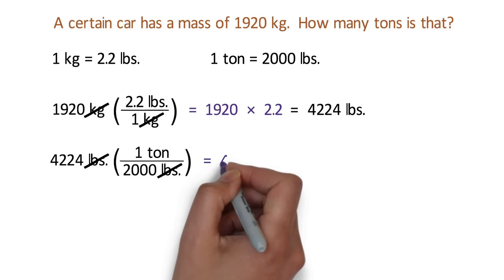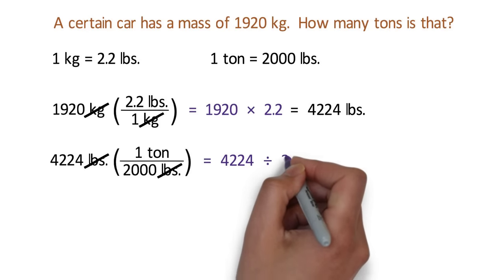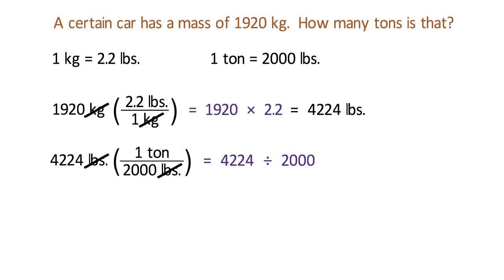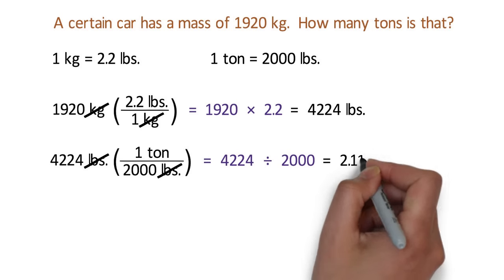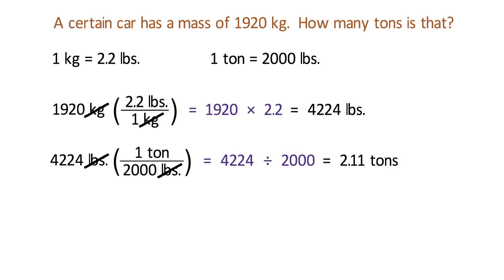In our calculator, we type 4,224 divided by 2,000 because the 1 is on the numerator of the fraction. Our final answer works out to be 2.11 tons. Okay, we got the correct answer, but it turns out that there is an even better way to solve problems that involve multiple conversion factors.